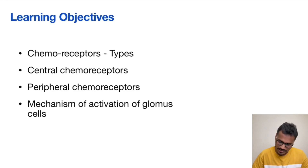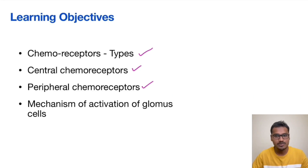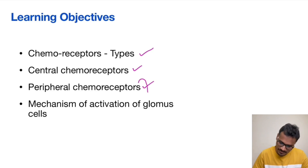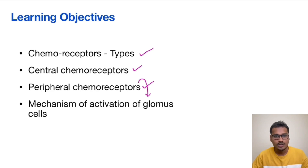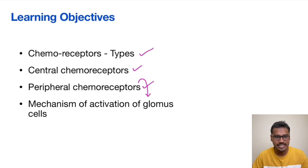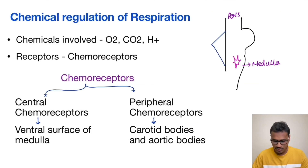Coming to the subtopics, we will be discussing about the chemoreceptors — primarily the central and peripheral chemoreceptors. In peripheral chemoreceptors, we have an important cell called the glomus cell, and we will see how the glomus cells get activated. Let's jump into the topic.